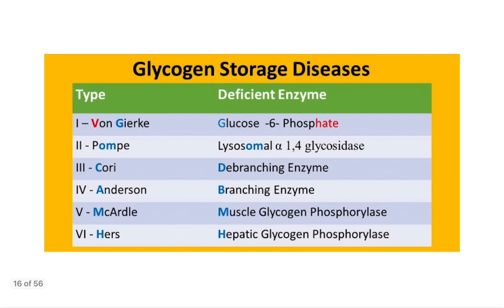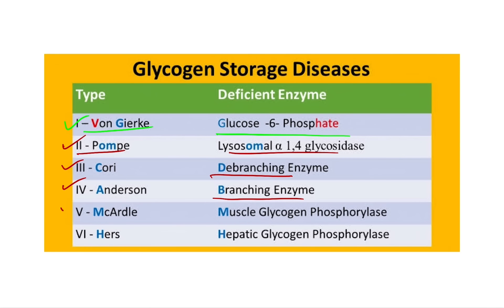The deficient enzyme for Von Gierke disease is glucose-6-phosphatase. Type 2 is Pompe's disease — acid lysosomal alpha-1,4 glucosidase is deficient. For Cori's disease (type 3), it is debranching enzyme. For Anderson disease (type 4), it is branching enzyme. For McArdle disease (type 5), the deficient enzyme is muscle glycogen phosphorylase. For Hers disease, it is hepatic glycogen phosphorylase.